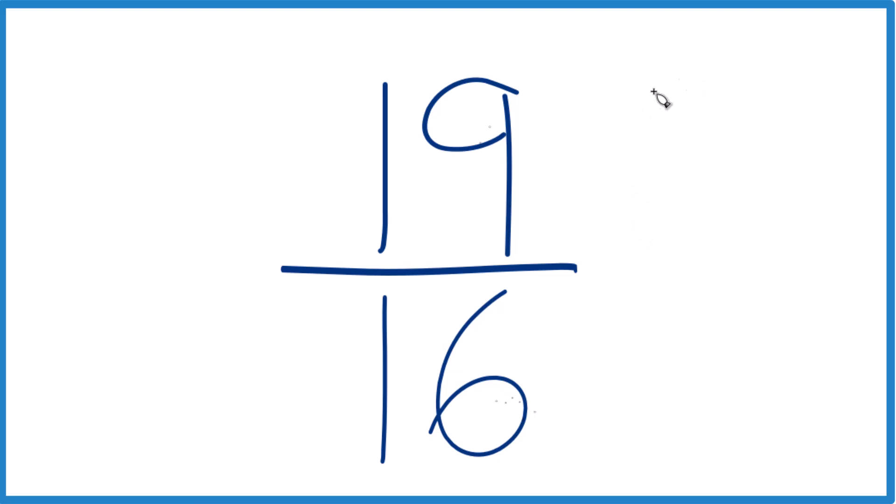What we need to do is find a factor, a common factor. That's a whole number that goes evenly into 19 and 16. But here's the problem.